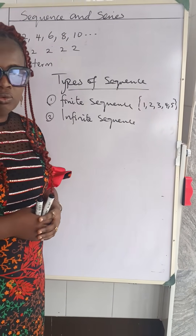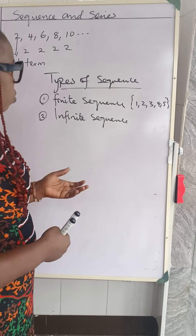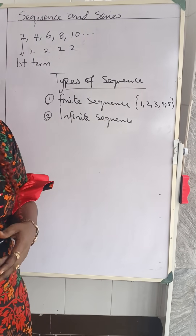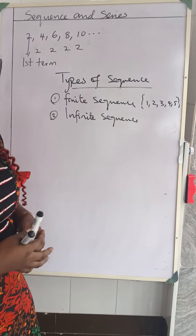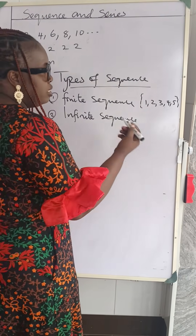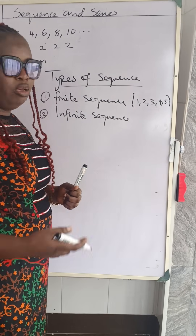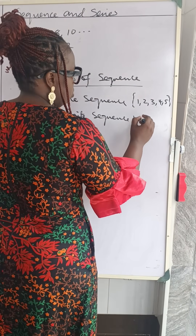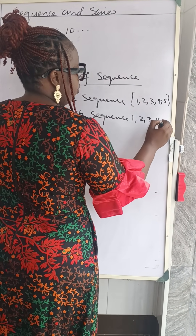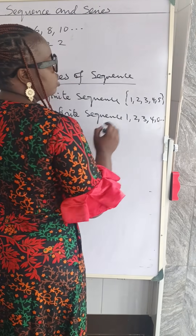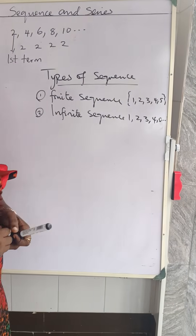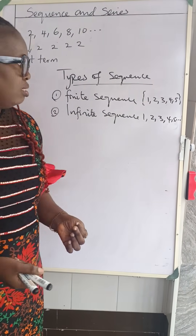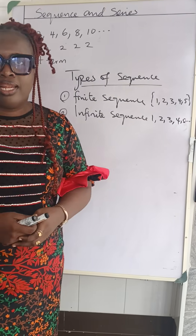Now let's look at infinite sequence. Does it have an end? No. Infinite in English means something without end — it doesn't have an end. An example is our numbering system. Counting our numbers: one, two, three, four, five, and it continues. Because of the dots, it continues. That is an example of an infinite sequence.